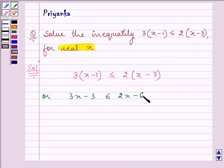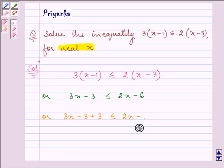Now, on adding 3 to both sides, we have 3x - 3 + 3 ≤ 2x - 6 + 3.